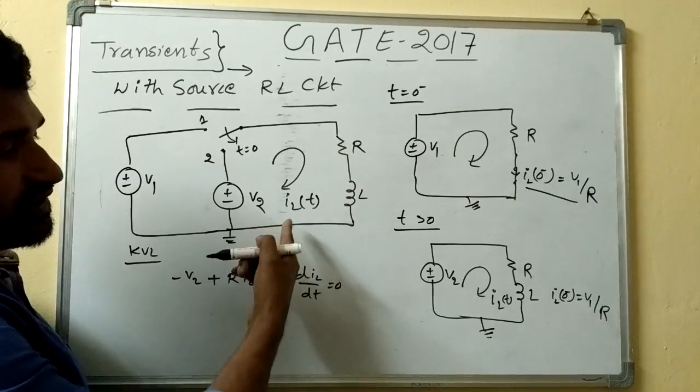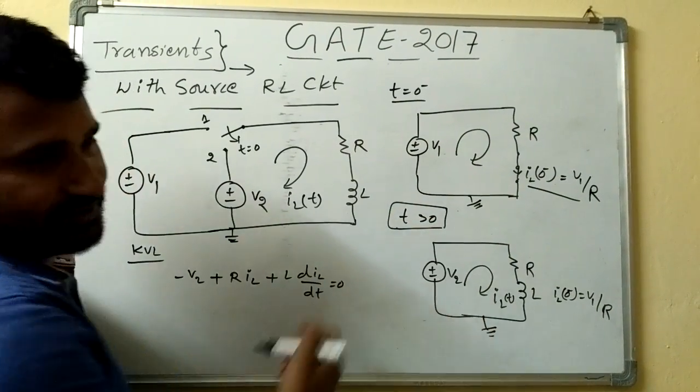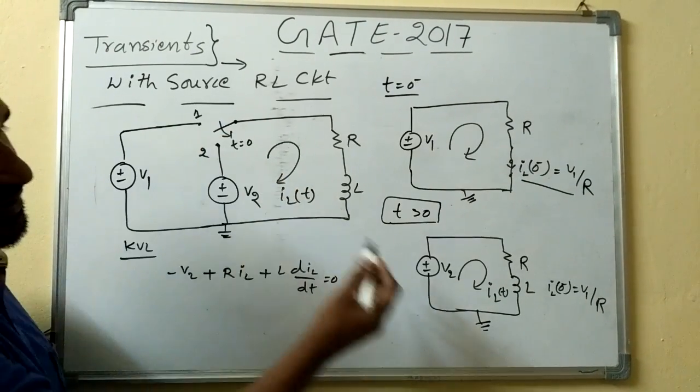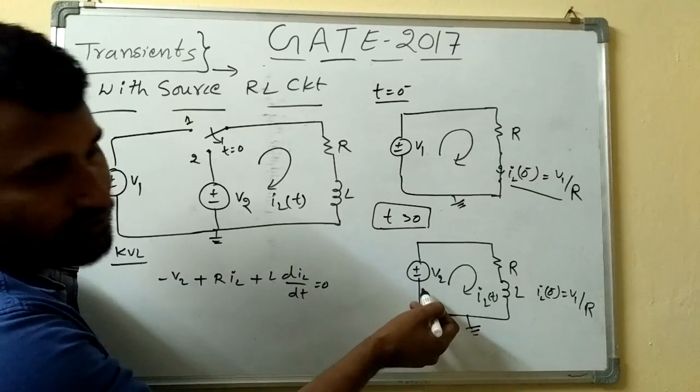Now we need to find iL of t for t greater than 0. So for t greater than 0, the circuit will become like this, that is, the position is, the switch position is here. That means, now the rL, the components will connect it to the source 2.